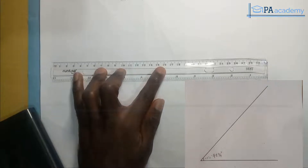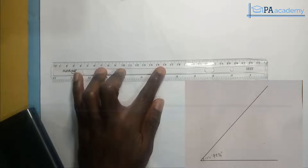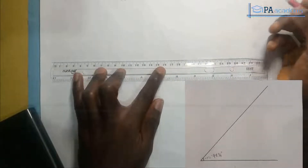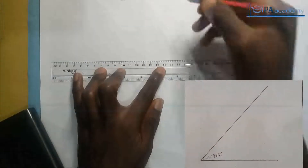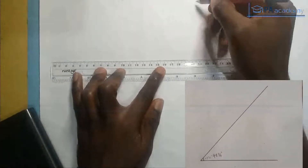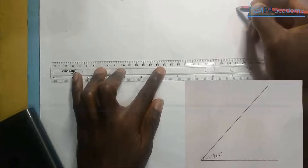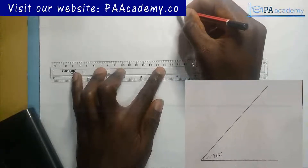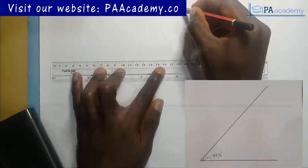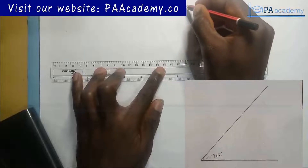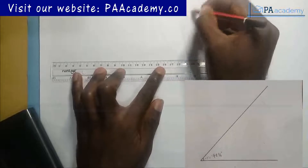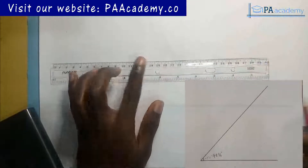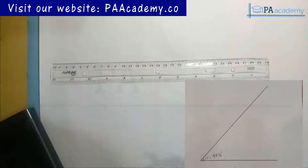Welcome to Pey Academy. In this video I'm going to be showing you how to construct angle 48¾ degrees, so an angle of 48 and three-quarters degrees.